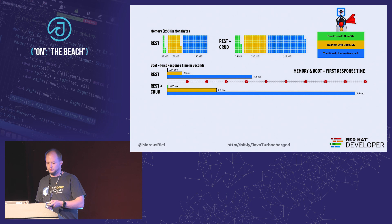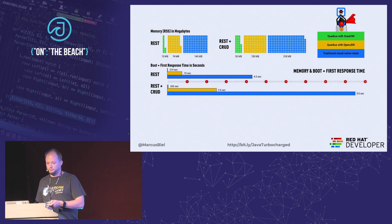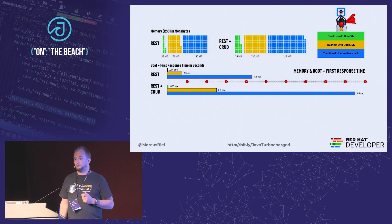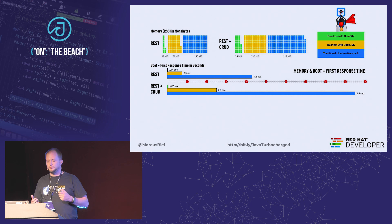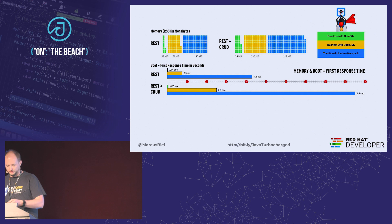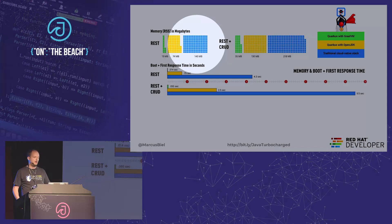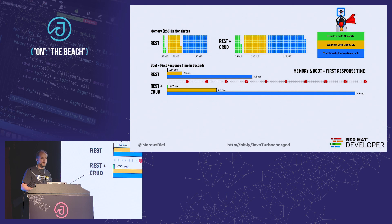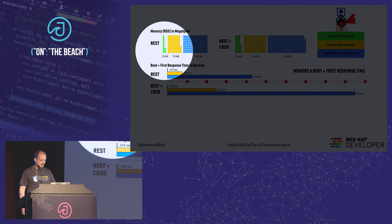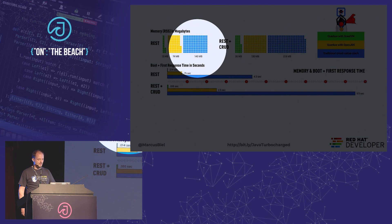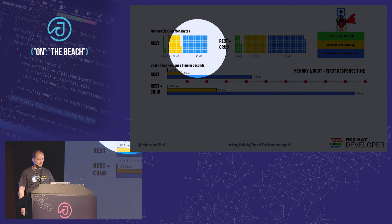Now let's compare memory — and when I say memory, I mean memory RSS, because in the cloud that's really what truly matters. We pay for memory, and RSS means the entire memory the process is using — not just the heap. For a typical traditional application, we would use as much as 140 megabytes. In a multi-cluster environment with 100 nodes, that scales up quickly. This is why many companies have moved to Go or Node. But with Quarkus running as a native executable, we go as low as 13 megabytes of RAM RSS — about 10 times less.